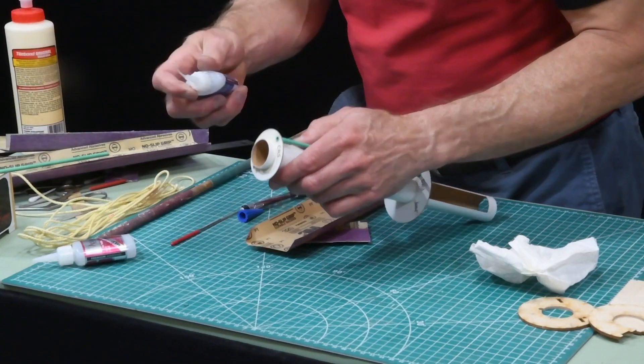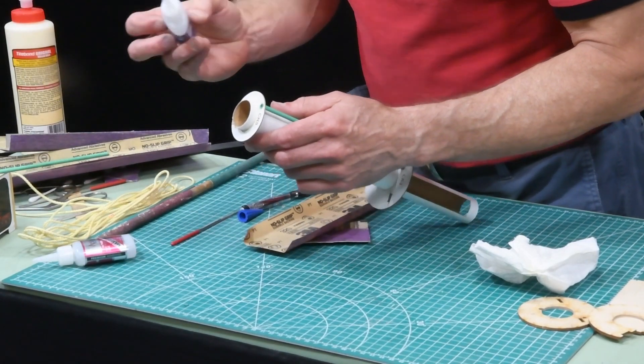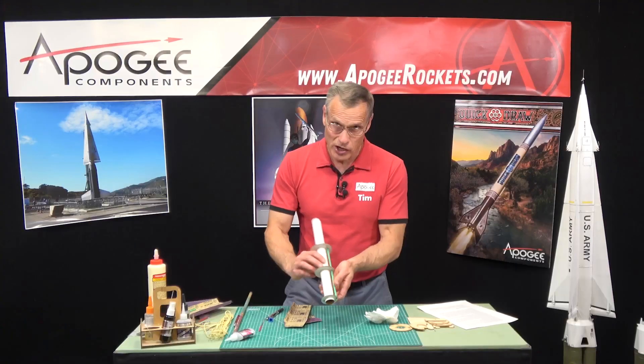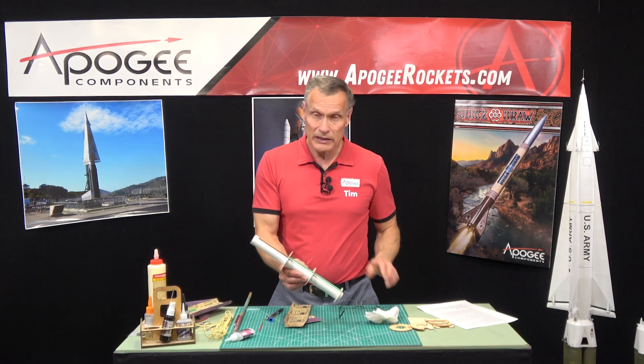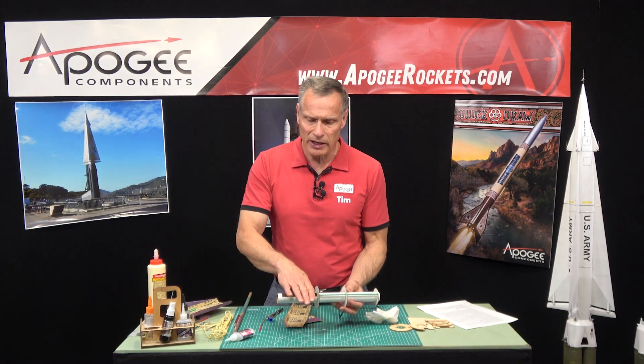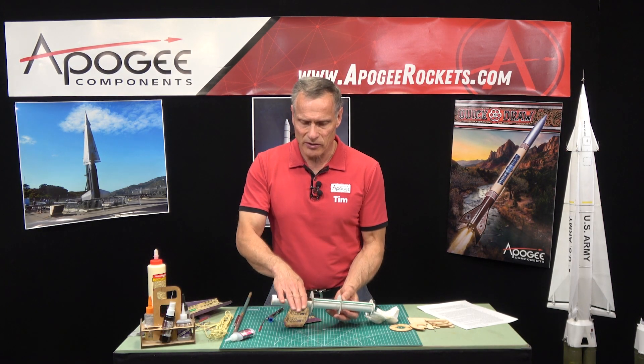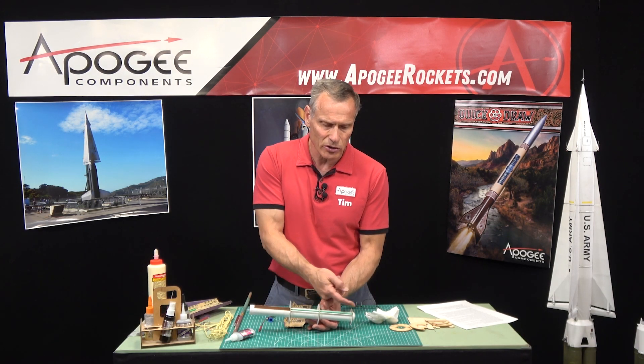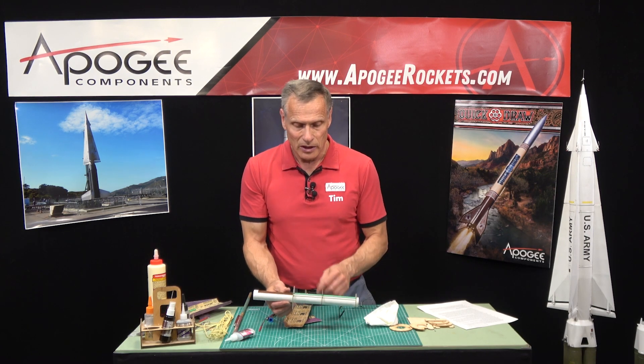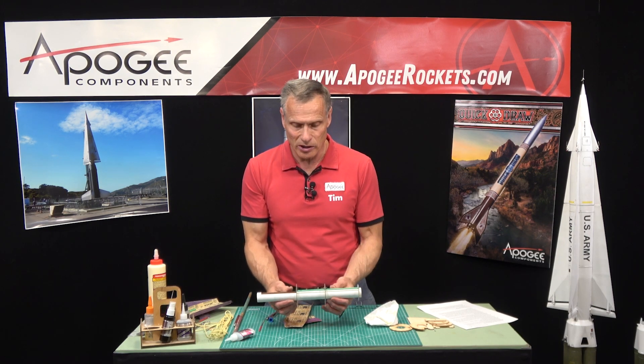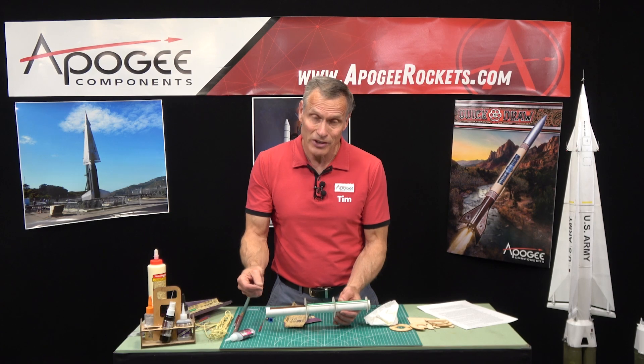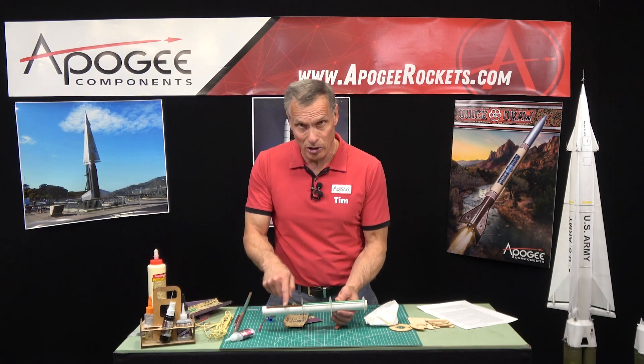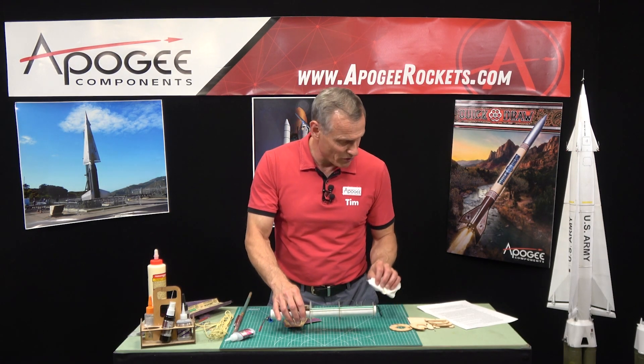This tube right here is for our igniter. The upper stage has to be ignited electronically. Our ebay and our electronics is going to be here, the motor is down here. So we're going to run the igniter through that hole so that it can go into the bottom of the motor and ignite that motor. Without this tube in here it would be really hard to get the igniter from down here to up here. So that's the purpose of that.